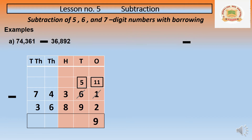We have completed the ones place. Now let us move to the tens place. The tens place now has 5 tens. In 5 tens we have to minus 9 tens — is it possible? No. Again we will borrow from the hundreds number. In the hundreds place we have 3, representing 300. From 300 we borrow, making it 200.